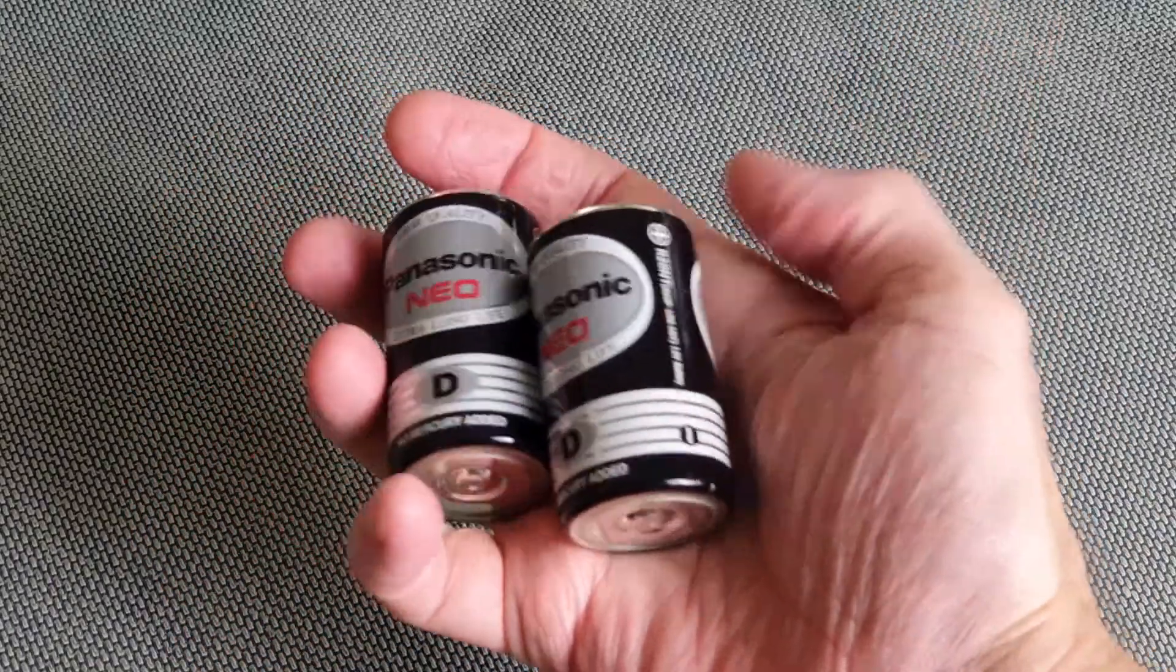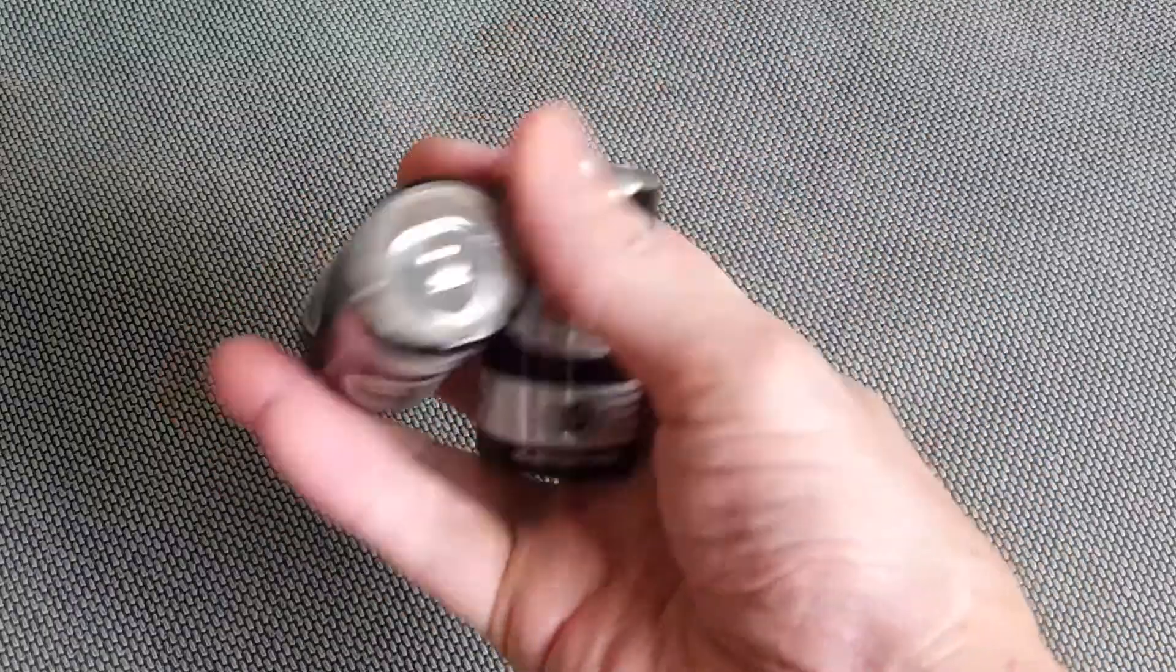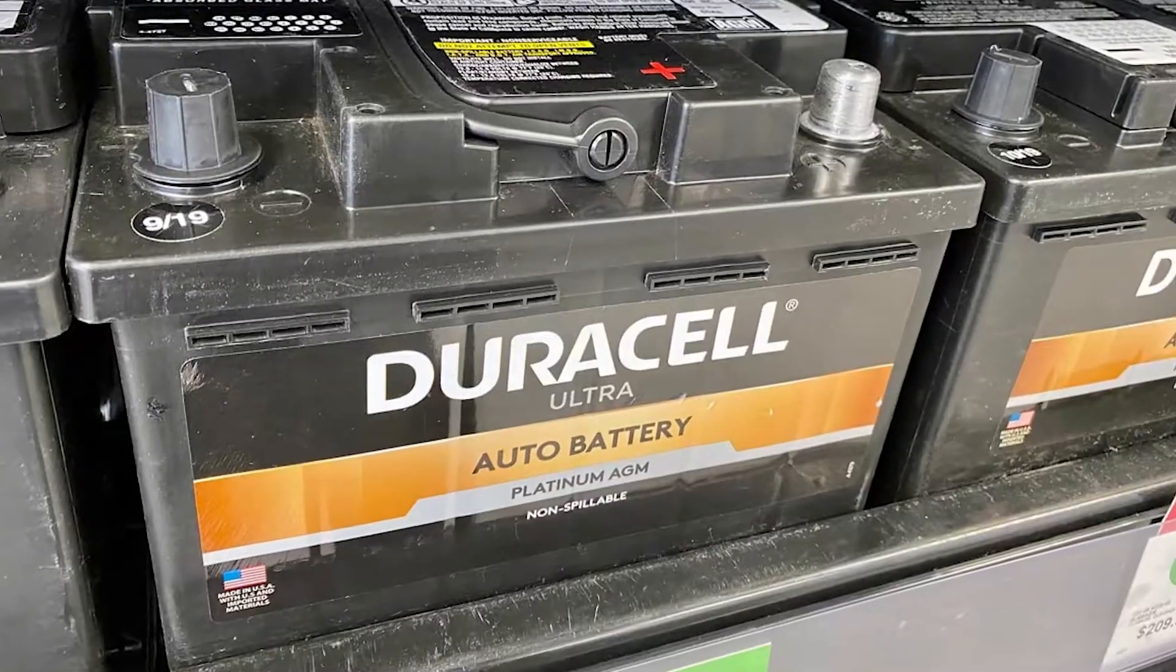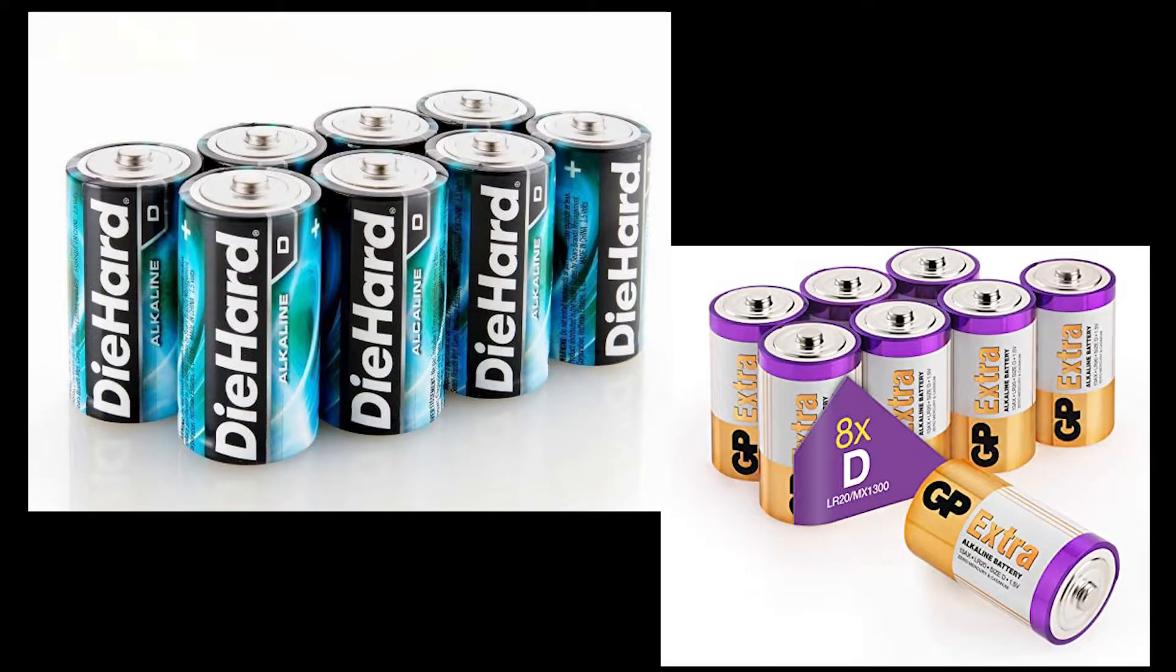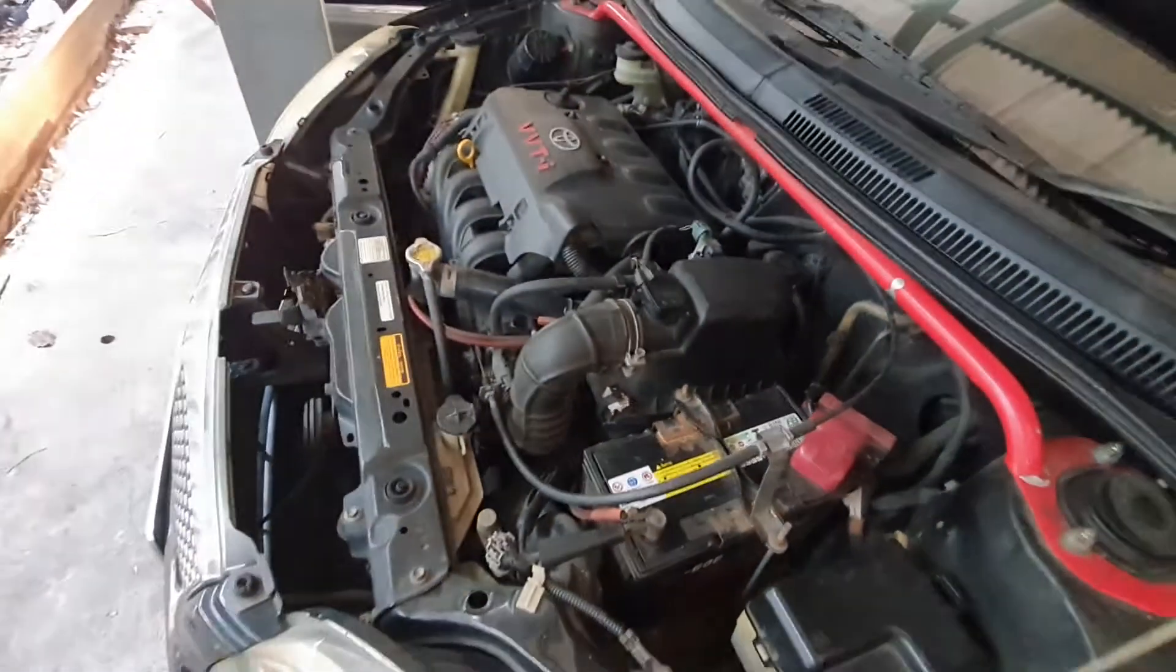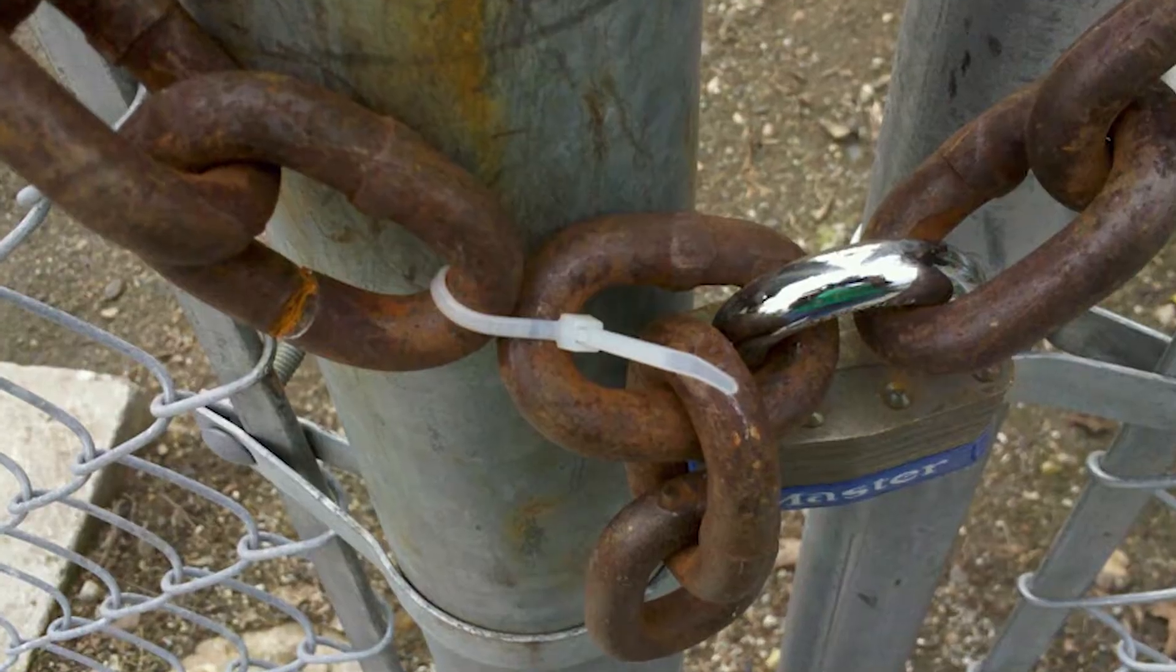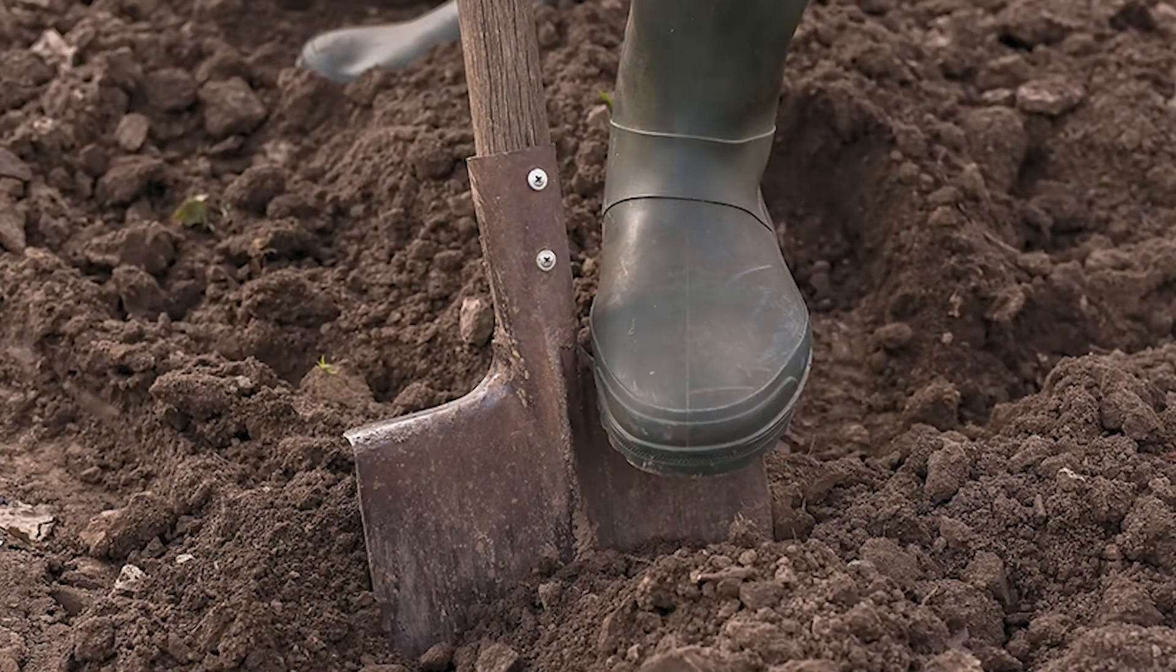If you take eight D cell batteries and connect them all in series, you end up with 12 volts, exactly the same as a car battery. Have you ever wondered why this stack of D cells cannot be used to start an automobile? Well the simplistic answer might be it just can't produce the amps, but that's not really a complete understanding. Let's dig in and figure this out.